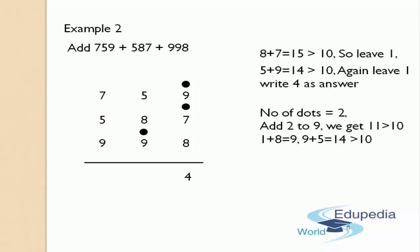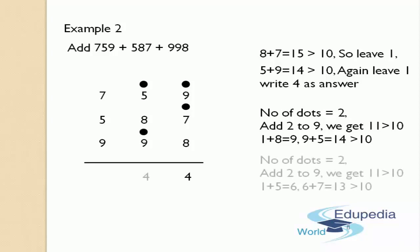Again, add this 9 to the above number, that is 5 — 9 plus 5, you will get 14. Again, this is a 2-digit number and it is greater than 10. So you have to leave 1. Instead of leaving 1, you have to place a dot on the top of the number 5, like this. You have left the 1 and the remaining number is 4. Write the remaining number 4 in the answers place, like this. Now count the number of dots that you have got in the second column — the number of dots is 2.